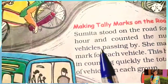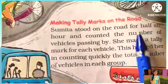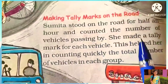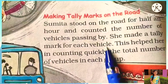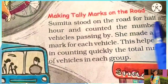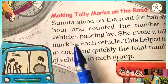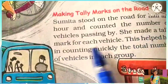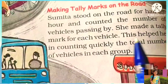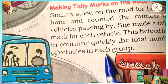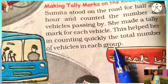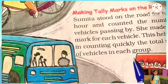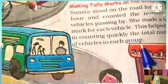Making tally marks on the road. Samita stood on the road for half an hour and counted the number of vehicles passing by. She made a tally mark for each vehicle. Ab woh road pe khadi hoti hai half an hour ke liye, aur wahan se jitne bhi vehicle pass ho rahe hain unko count karti hai. This helps her in counting quickly the total number of vehicles in each group.